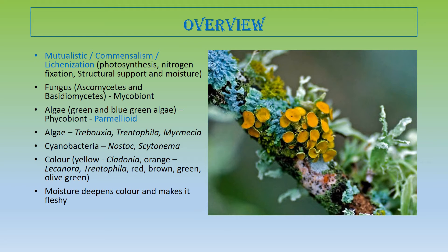In earlier times, it was thought that fungus and green algae were the only two partners in this mutualistic-commensalistic partnership. But later, by genomic sequencing of RNA, it was found that blue-green algae — that is cyanobacteria — is also sometimes present in this association. This is a mutualistic association, or we can say commensalism, where both partners benefit from each other. When fungi and algae are in this type of association, it is also called lichenization.